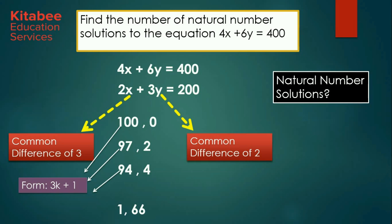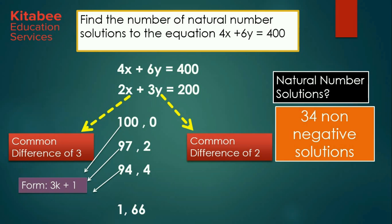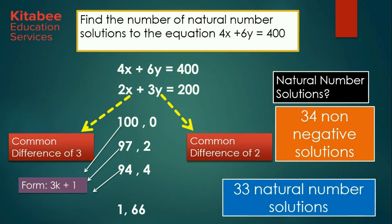As we need only natural number solutions, we exclude solutions that are not natural numbers. The values of x start from 1 and end at 100, all of the form 3k plus 1. When k equals 0 we get 1, and when k equals 33 we get 100. So k goes from 0 to 33, giving 34 solutions. If non-negative solutions were asked, the answer would be 34. But the solution 100, 0 has y equal to 0, which must be excluded, giving us 33 natural number solutions.